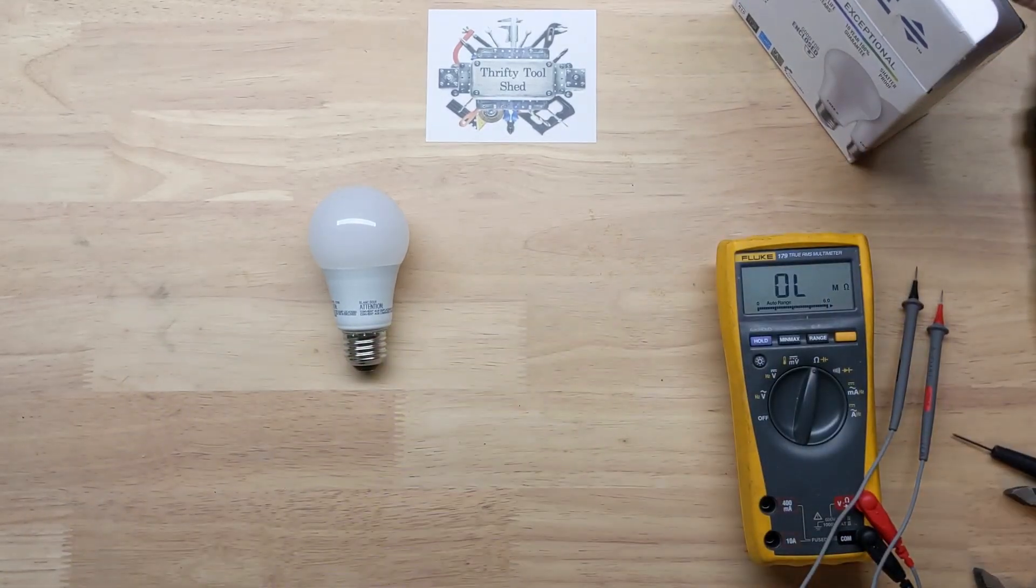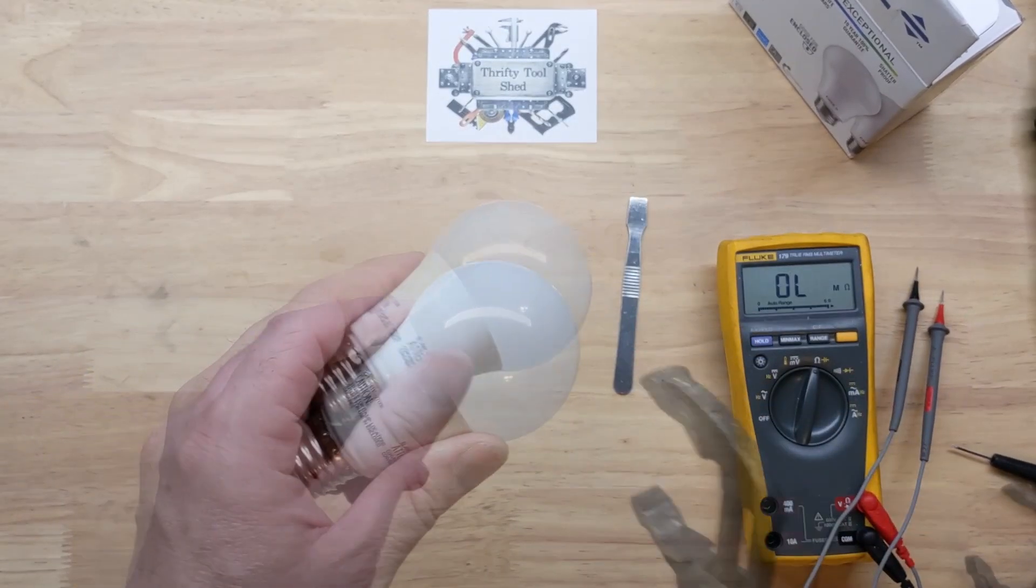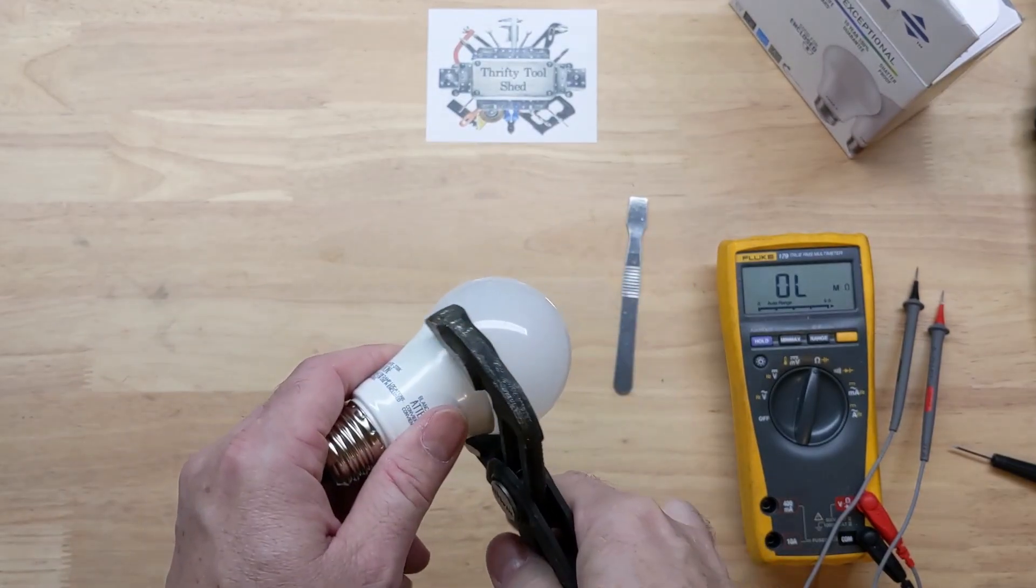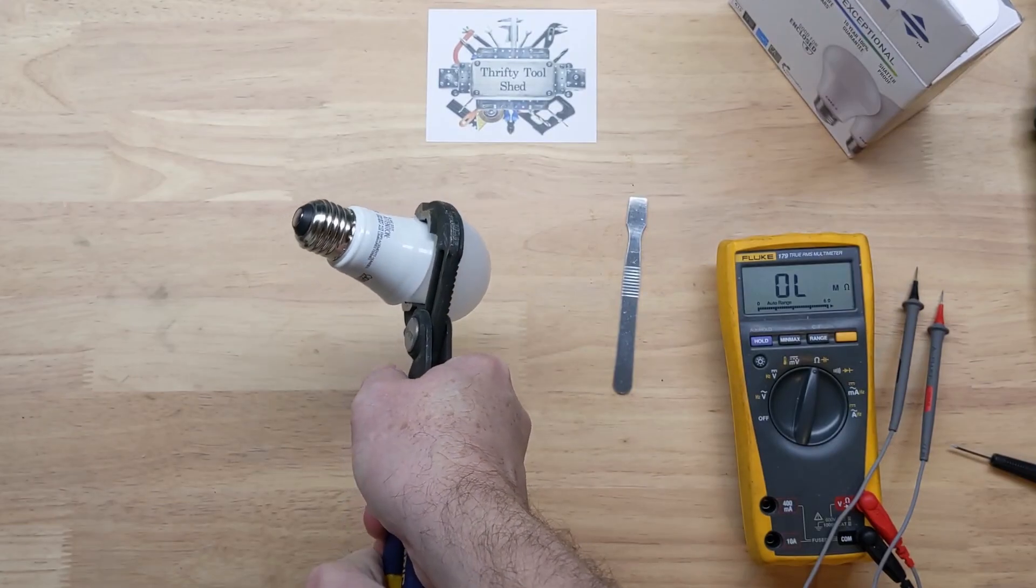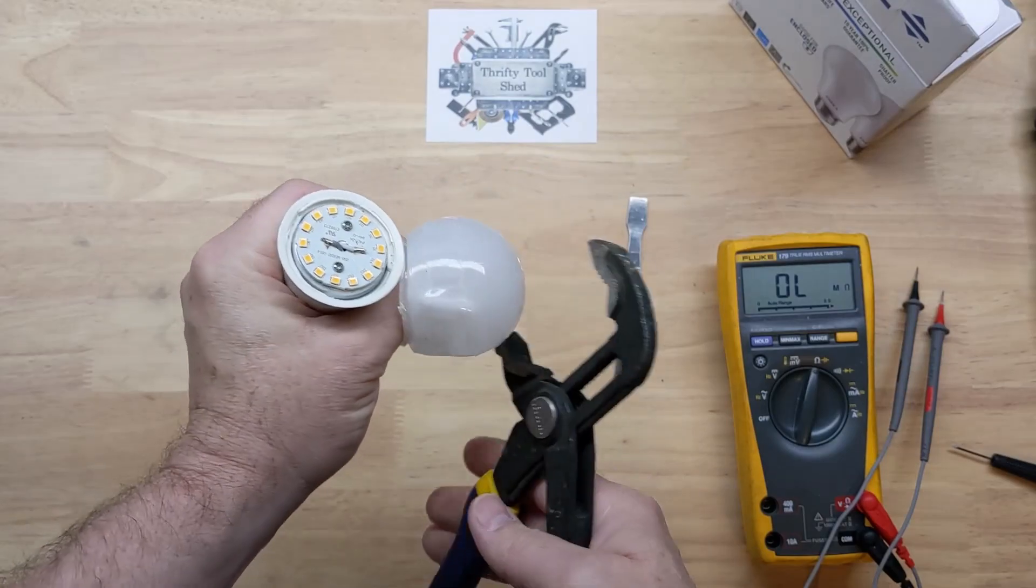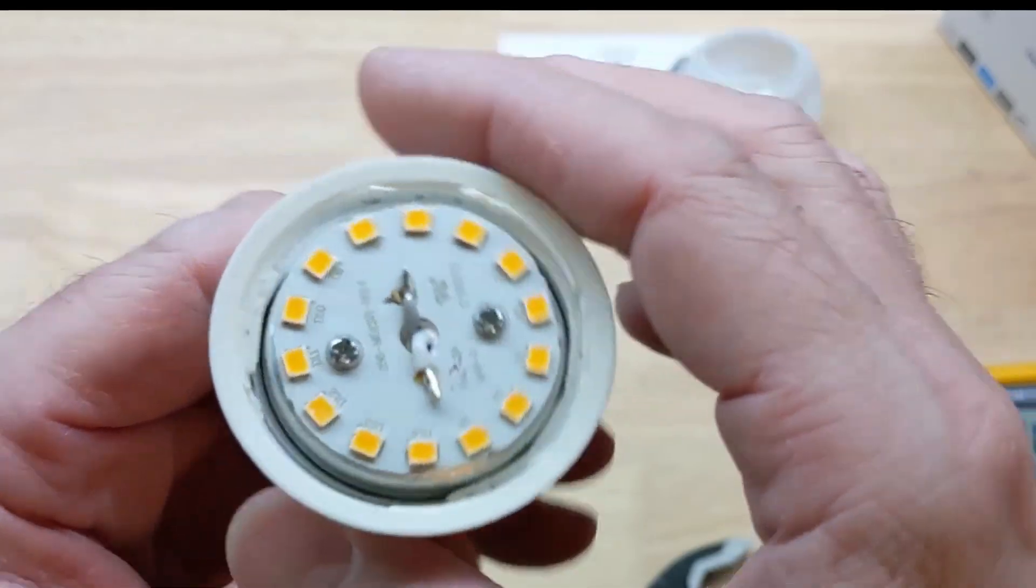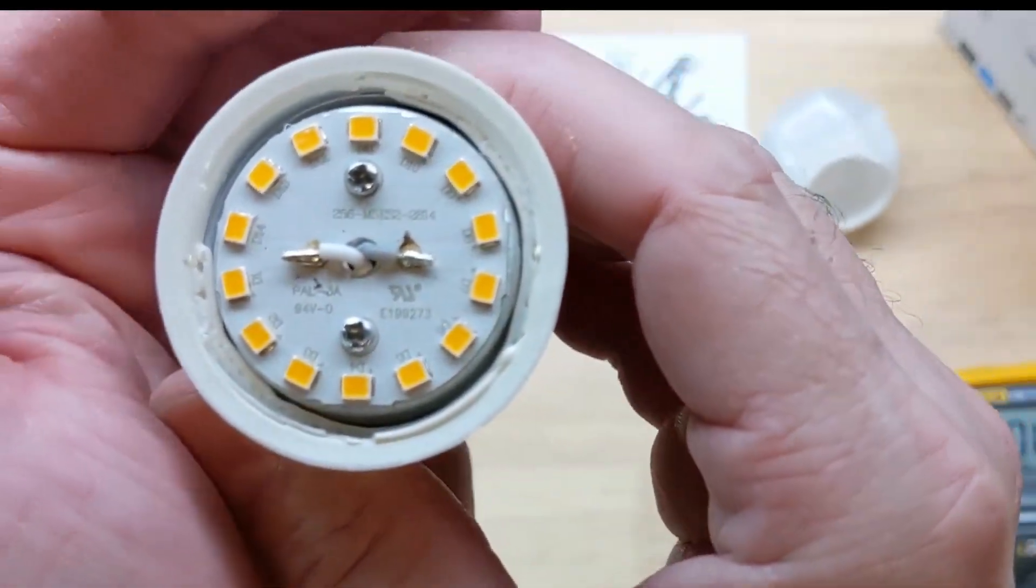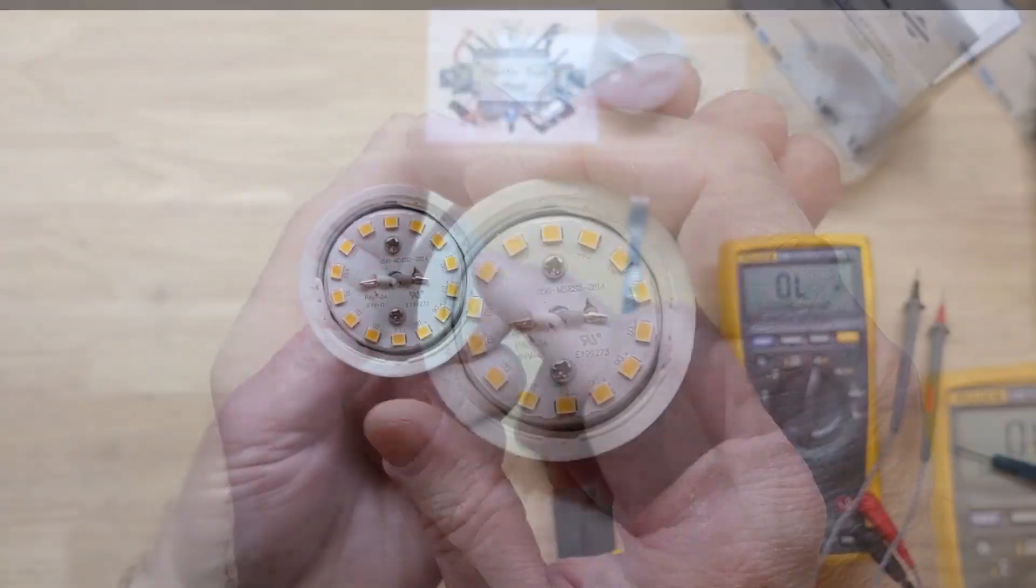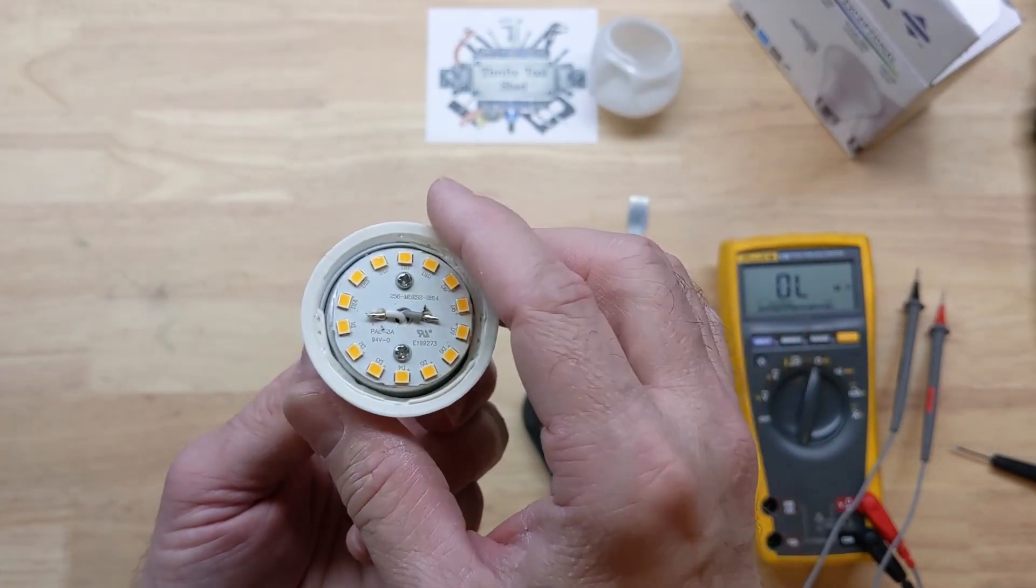There's definitely a little bit of difference. I don't think I'm gonna take time with a spudger to go around and take it apart. I think I'm just going to get right into it. I'm sure this is glued on there. And that's what we have inside of this one. I don't see any black spots or dark spots inside the LEDs themselves.